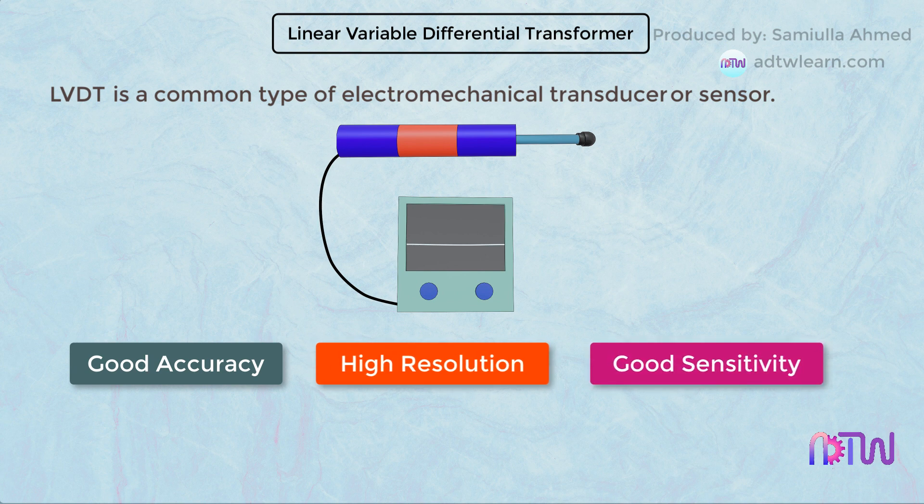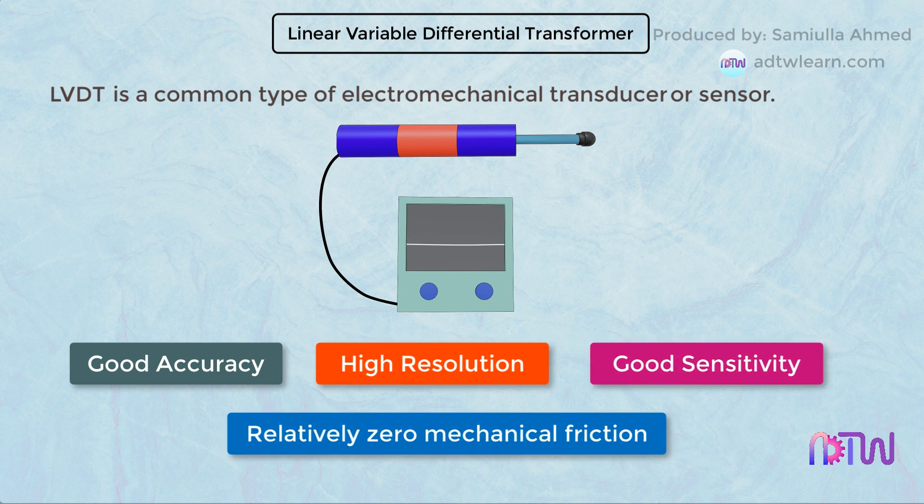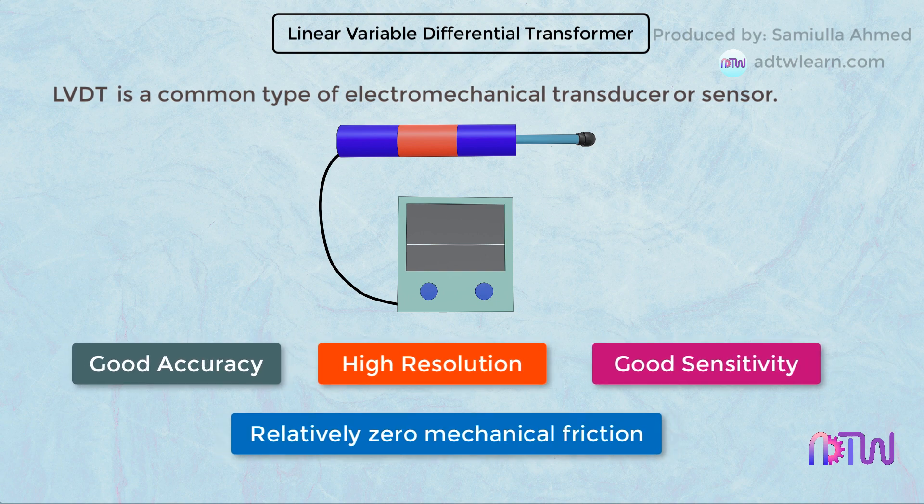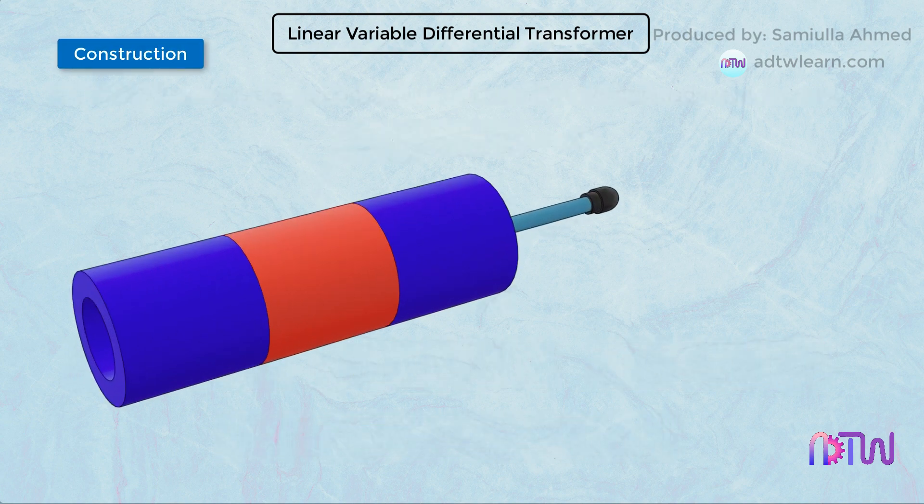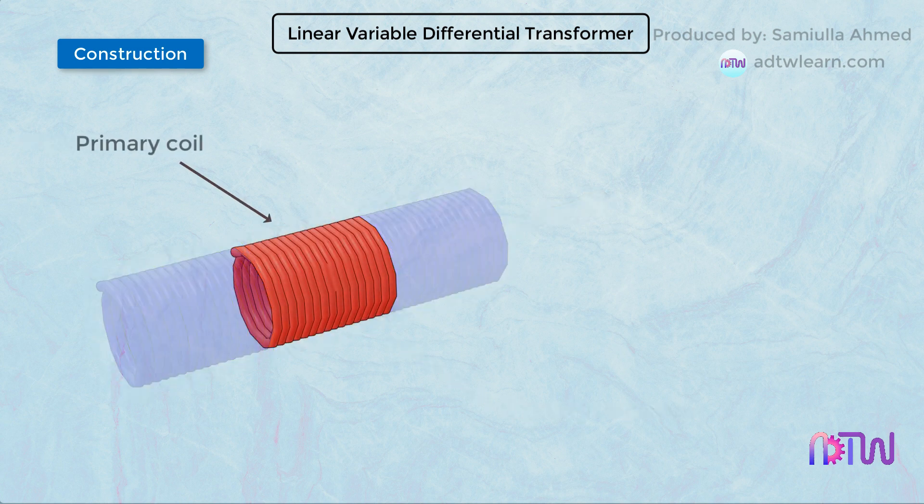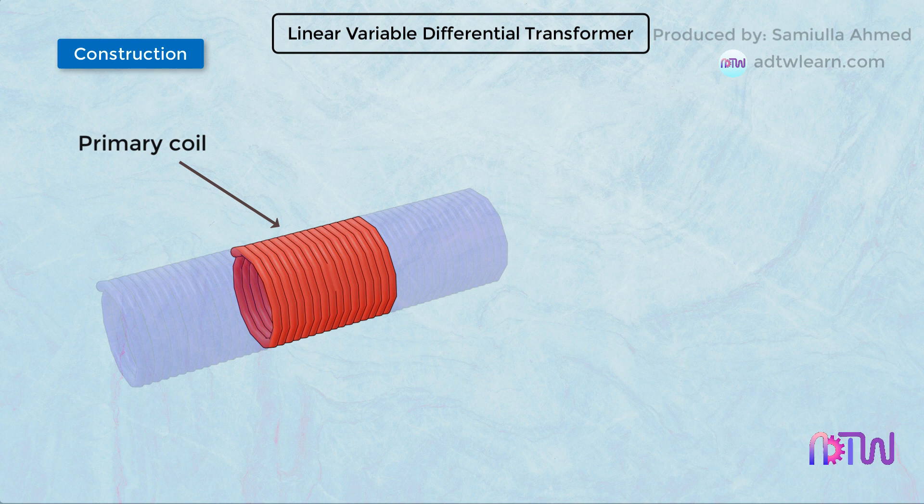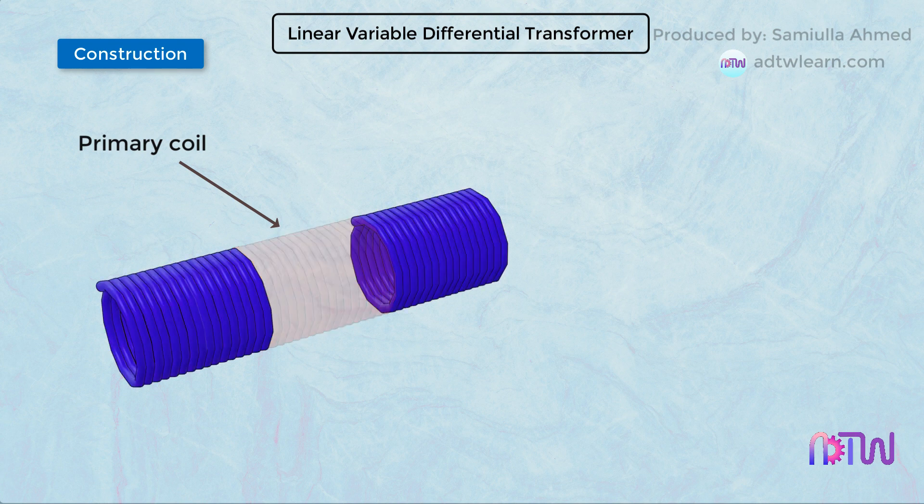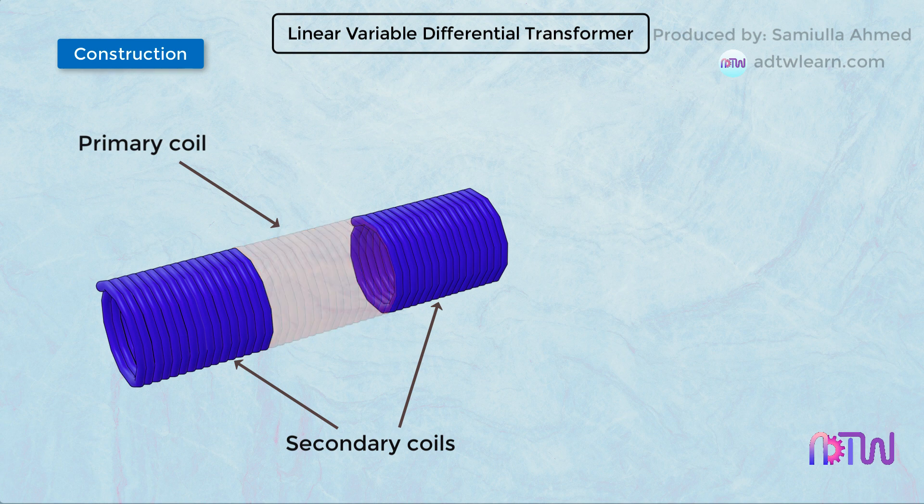Construction: A typical LVDT consists of a cylindrical transformer that carries three coils: one primary coil at the center of the transformer, and on either side of the primary coil there are two secondary coils. The two secondary coils have an equal number of turns but are wound opposite to each other.